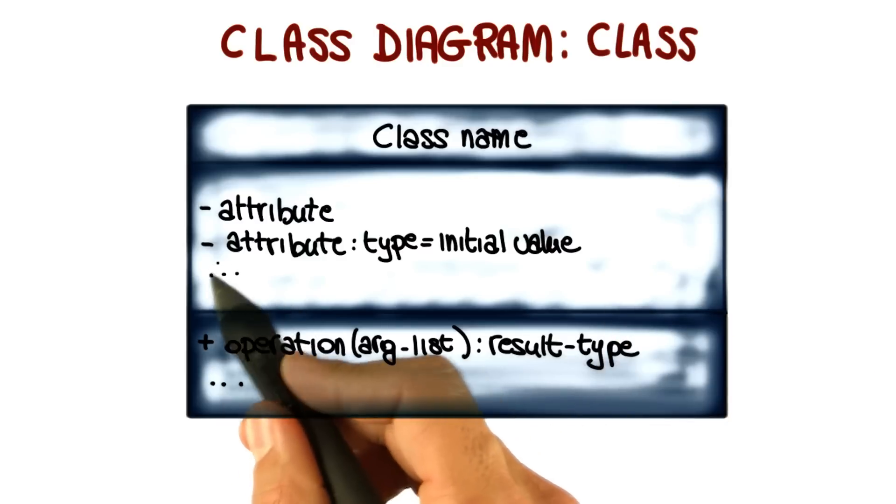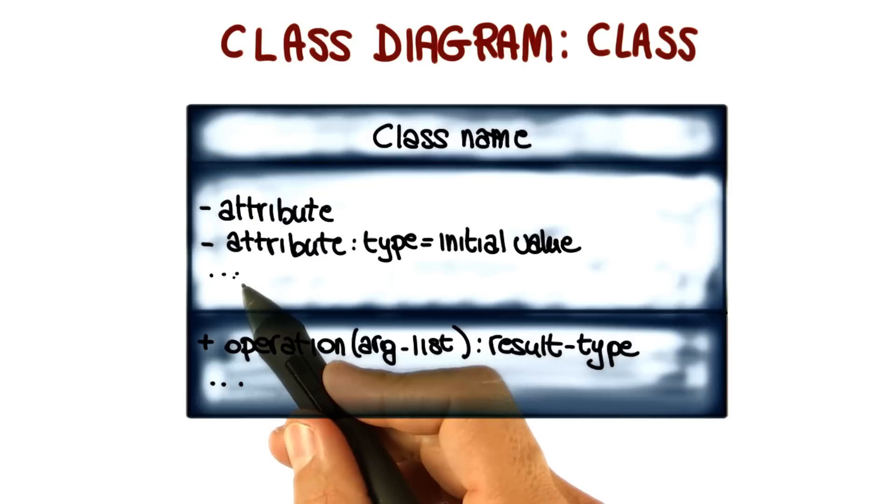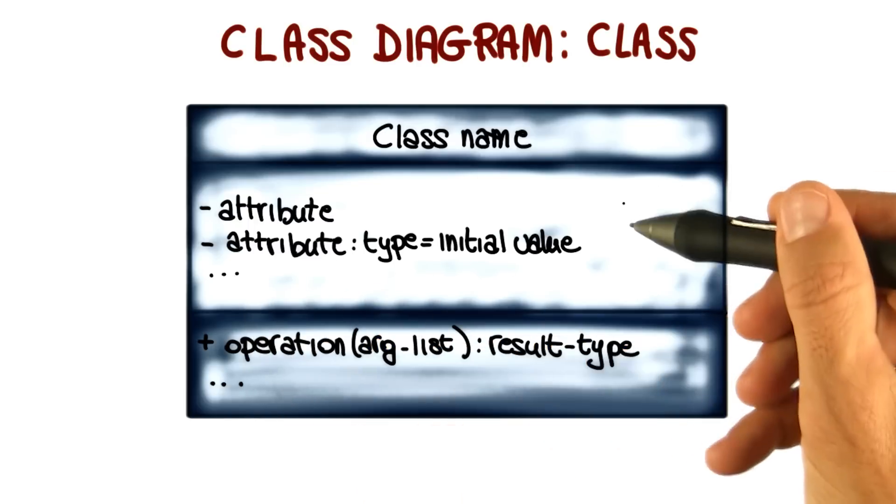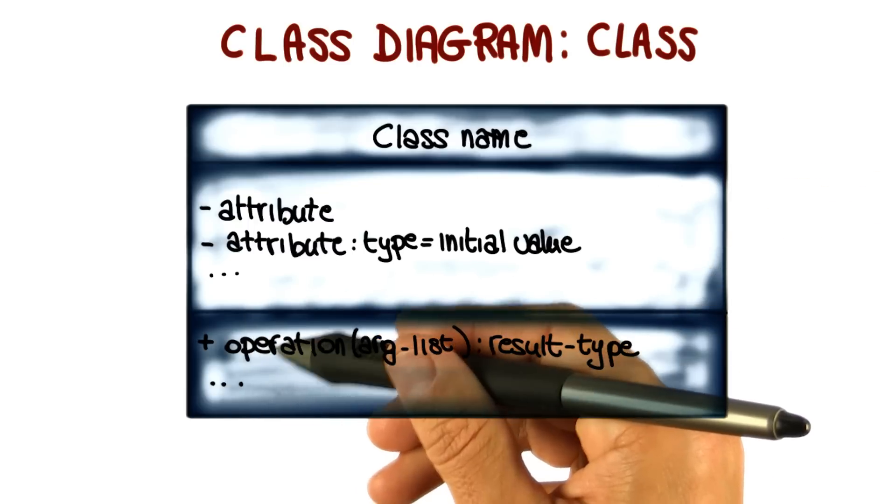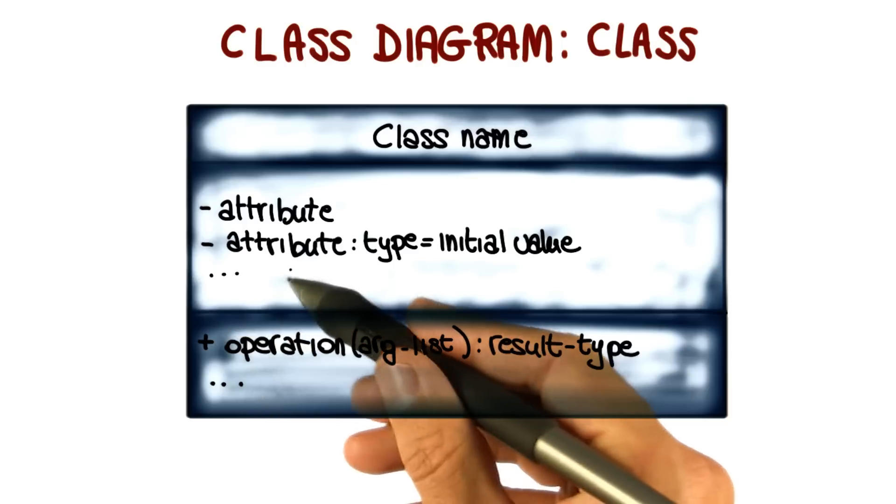Last thing I want to note is the use of ellipses that we can utilize to indicate that there are more attributes or operations, but we just don't want to list them now.